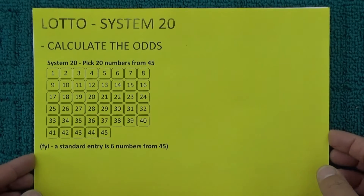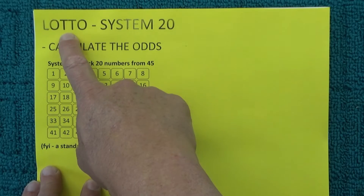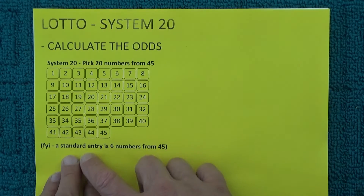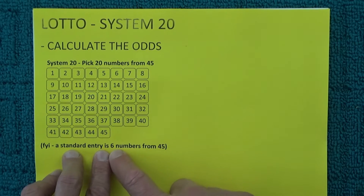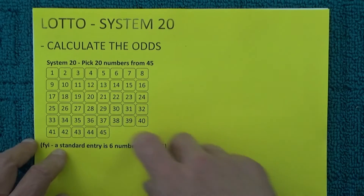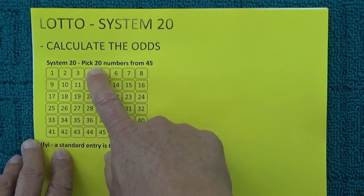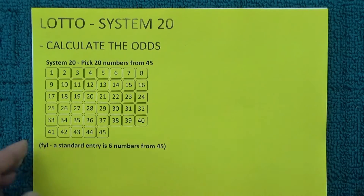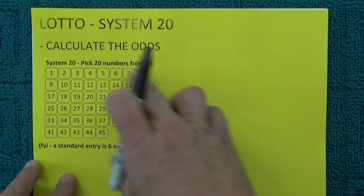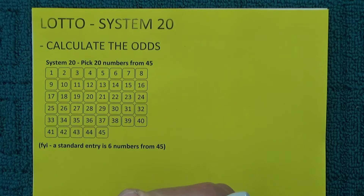Hello, today I'm going to show you how to calculate the odds of winning first prize in Lotto with a System 20 entry. A standard game is six numbers from 45 in Australian Lotto, but today I'm going to play a System 20 entry and actually pick 20 numbers from 45 and show you how to calculate the odds based on these 20 numbers that I've selected.